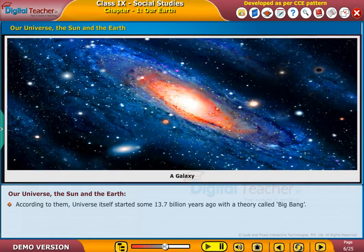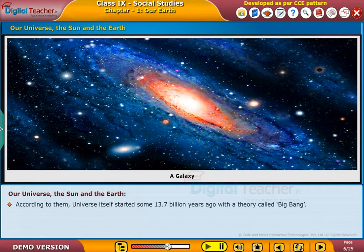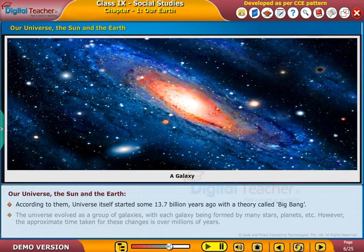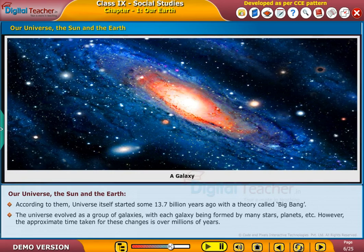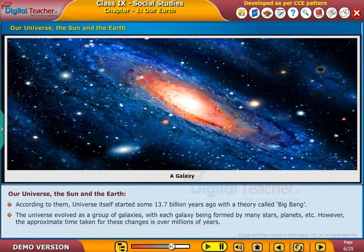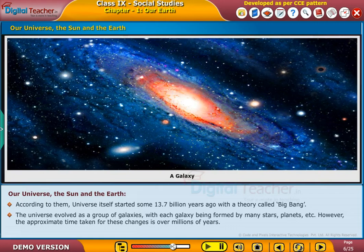According to them, the universe itself started some 13.7 billion years ago with a theory called Big Bang. The universe evolved as a group of galaxies, with each galaxy being formed by many stars, planets, etc.